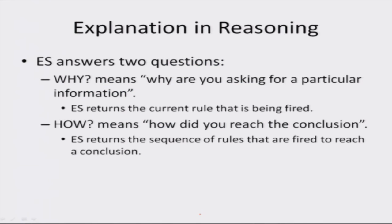Apart from providing advice and conclusions, the expert system also provides justification. 'Why' — meaning why it is asking for particular information — returns the current rule being fired that instigated the question. 'How' — meaning how it reached the conclusion — returns the sequence of rules that were fired to reach that conclusion.